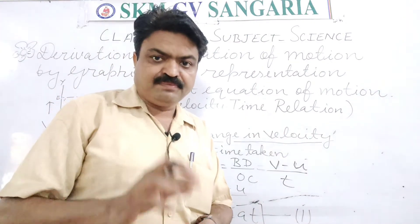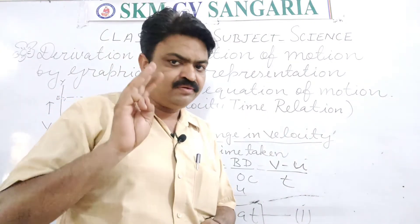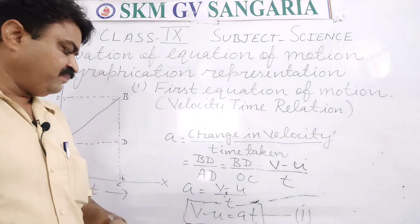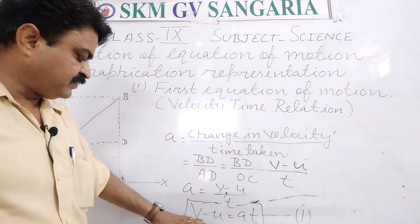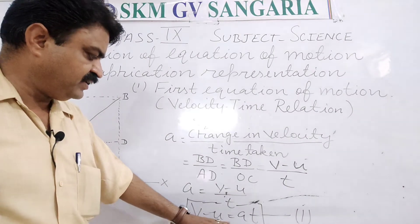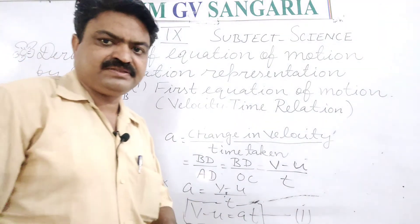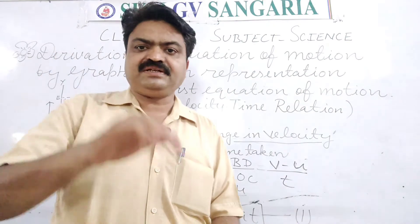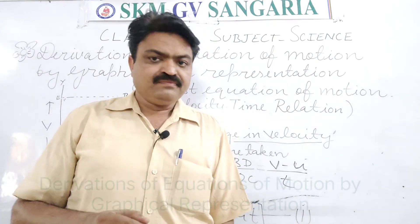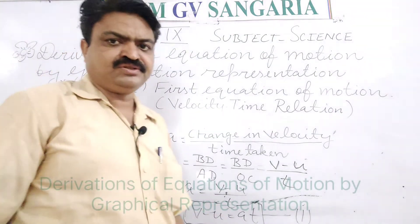With the help of the first equation of motion, we can know about three quantities: final velocity, initial velocity, and acceleration. Along with acceleration, we also know about the time. So that is the first equation of motion.